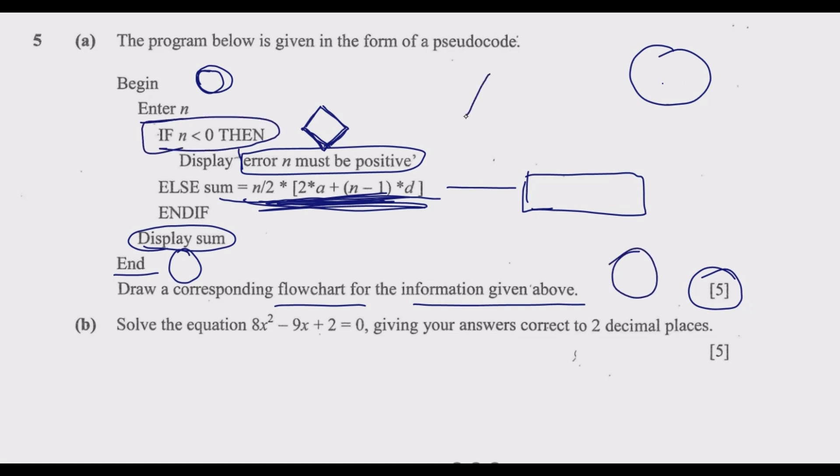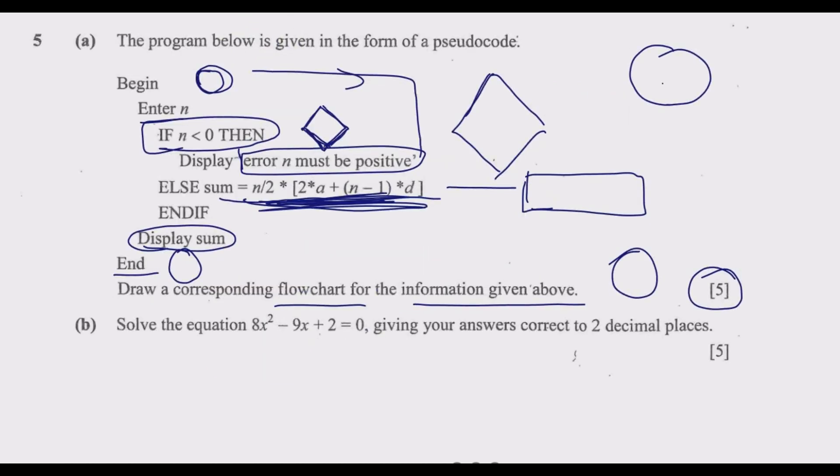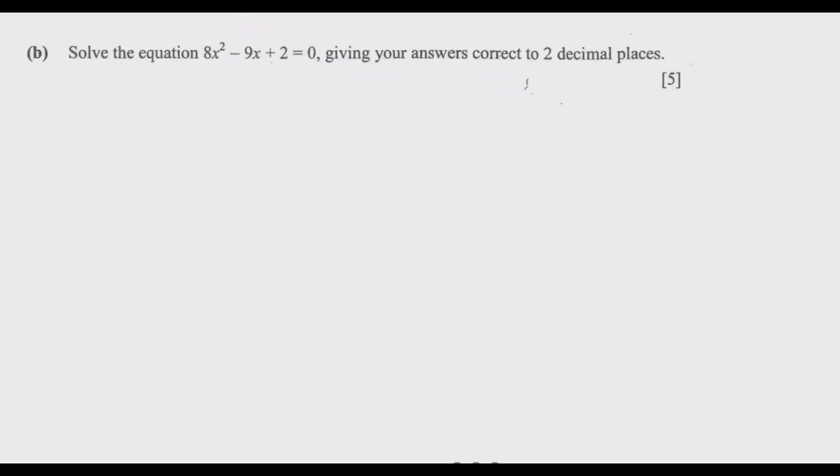If n must be positive, then exit. If going back, we would add a branch going back to enter, but in this case we are not told. Now let's look at question 5(b): Solve the equation 8x² - 9x + 2 = 0, giving your answers correct to two decimal places.